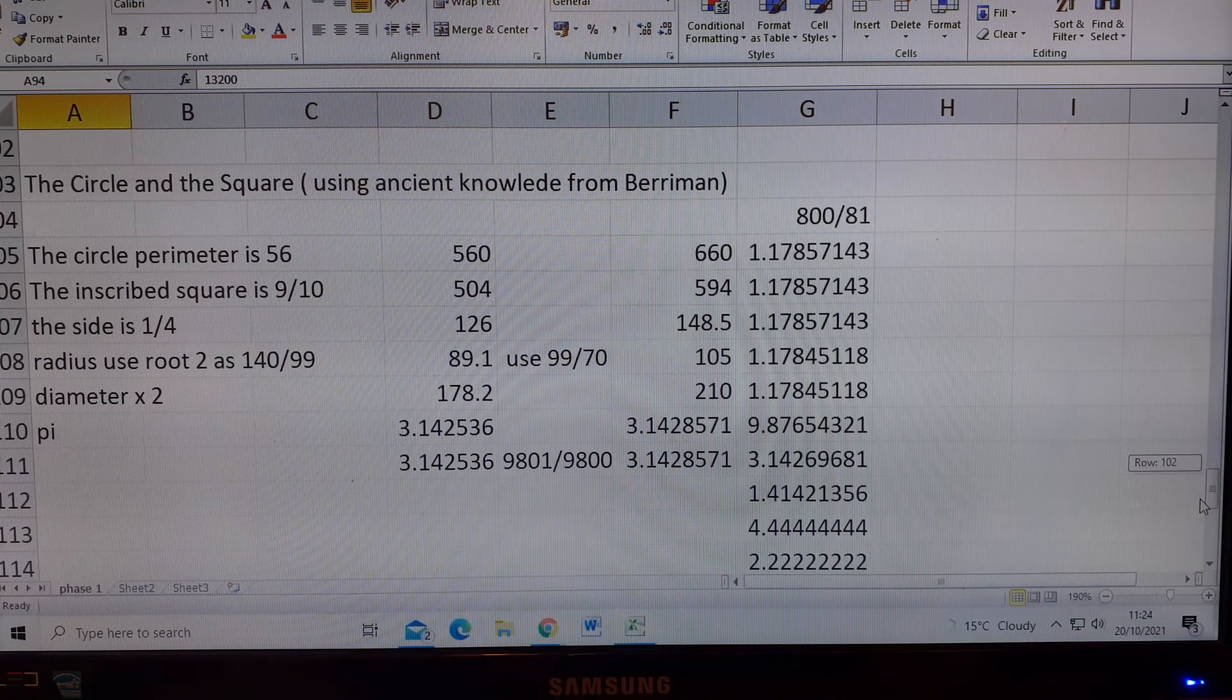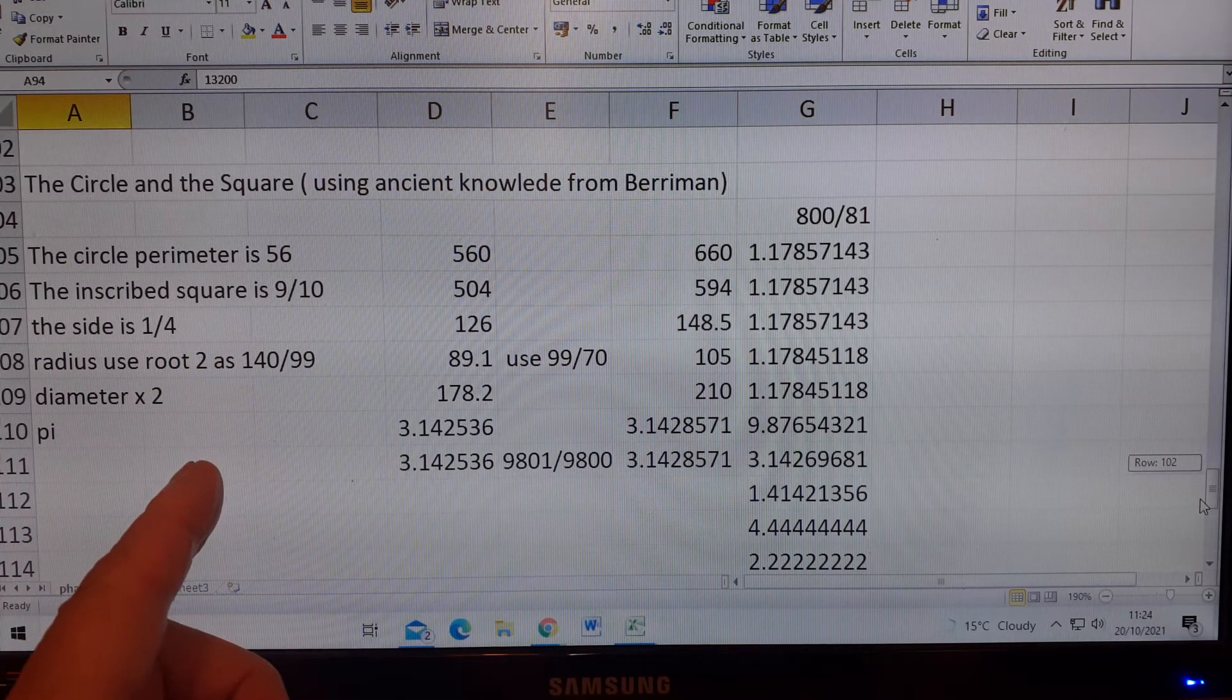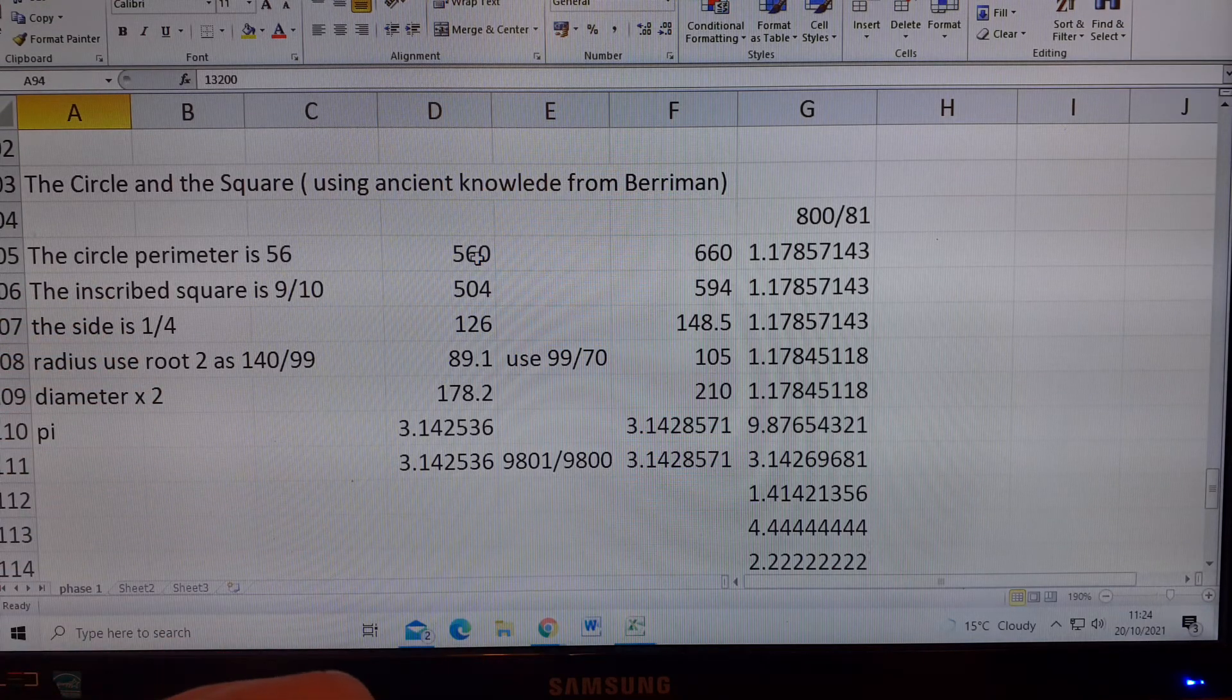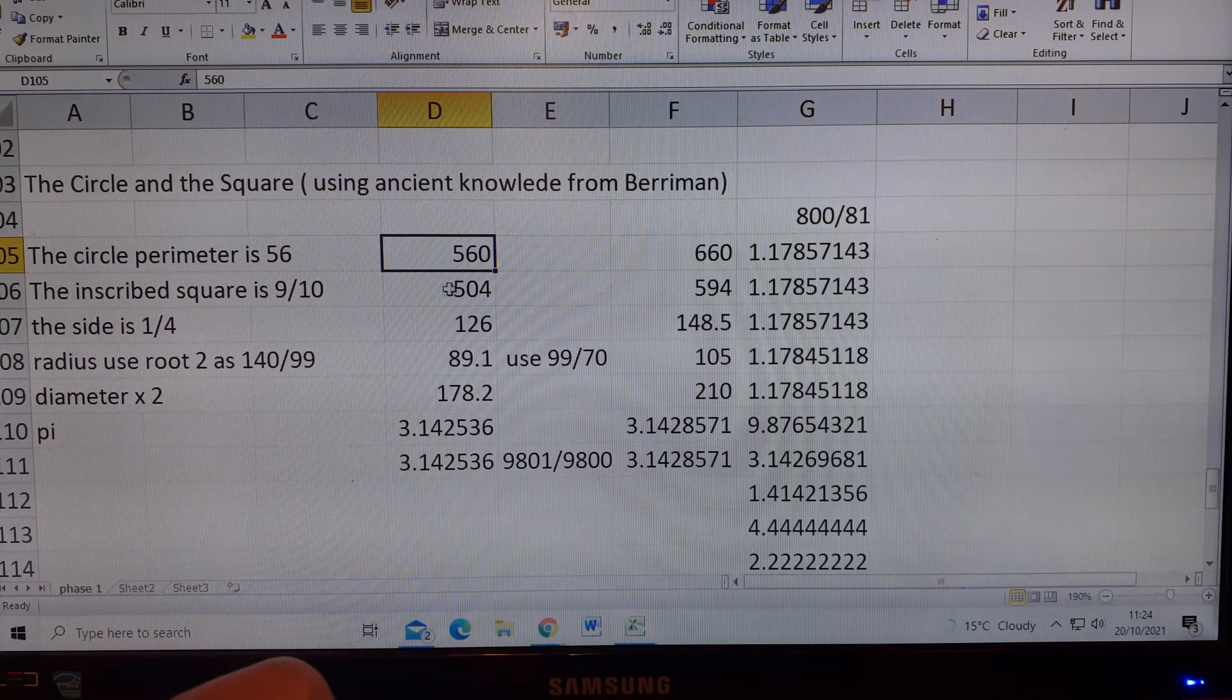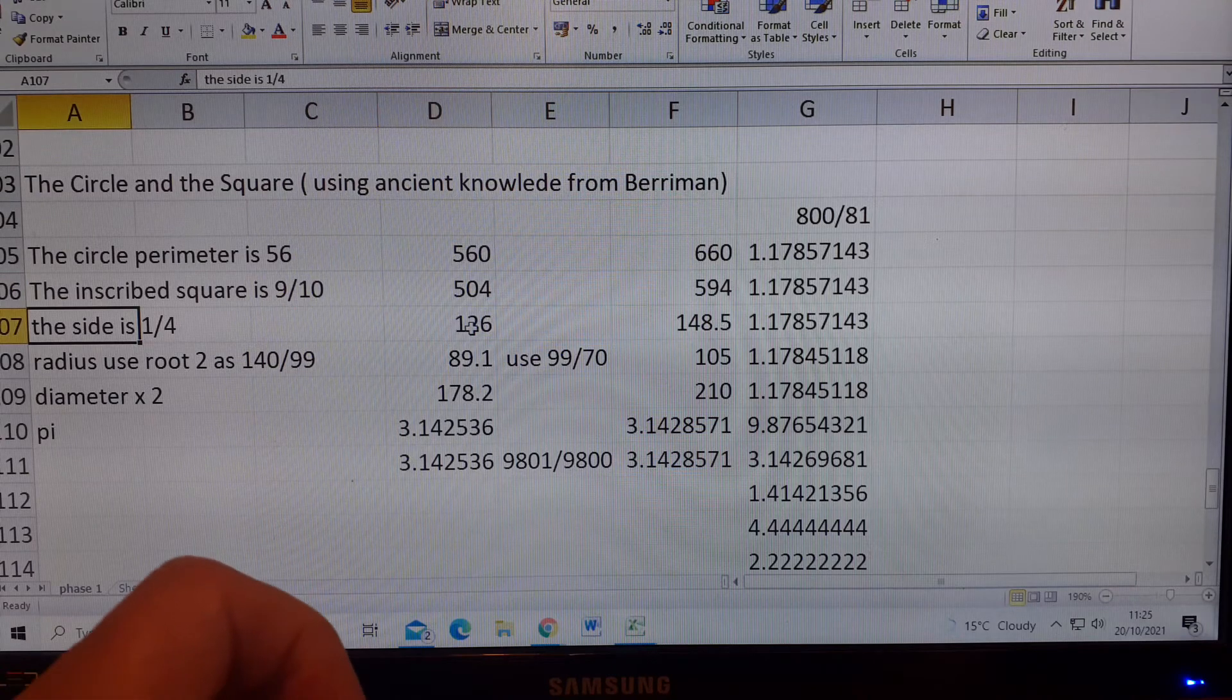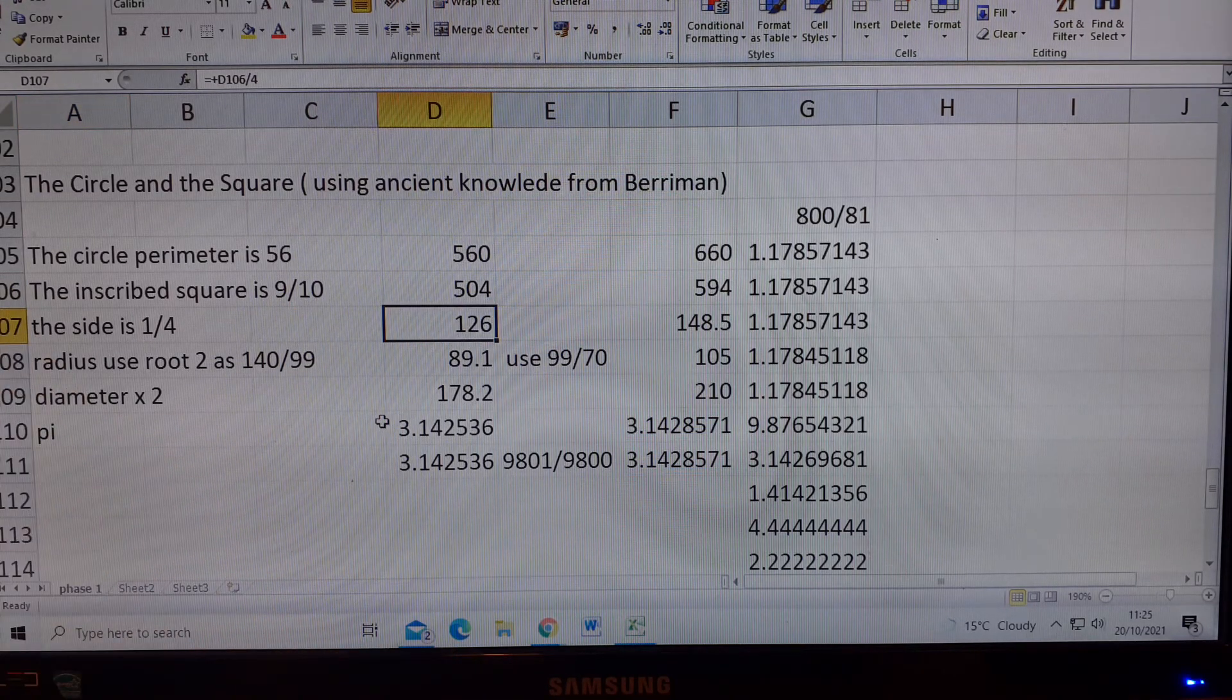The circle and the square using ancient knowledge from Berryman. What we know is, when the perimeter of the circle is 56, or 560 as we're using here, the inscribed square is 9 tenths of it, which is 504, and the side is a quarter of it. The inscribed square side is 126. We also know that there's a suggestion that the Egyptian foot is 12.6 inches.